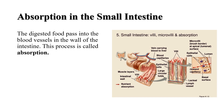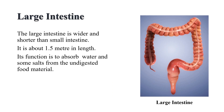The food that remains undigested and unabsorbed enters into the large intestine. The large intestine is wider and shorter than the small intestine. It is about 1.5 meters in length. Its function is to absorb water and some salts from the undigested food material. The remaining waste passes into the rectum and remains there as a semi-solid. The fecal matter is removed through the anus from time to time. This is called egestion.